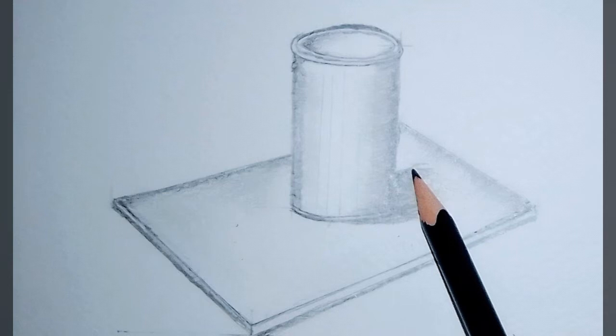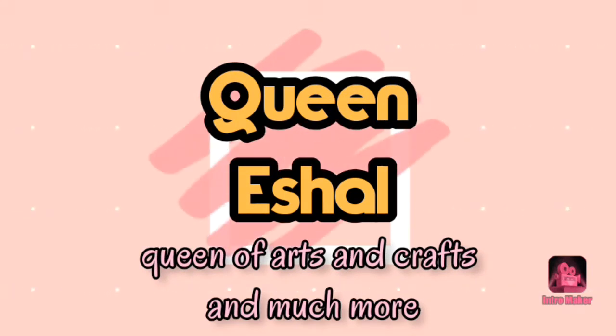Now let me tell you some shading instructions. Inner parts should be shaded dark while the outer part should be shaded light. Light comes from the left side so that part should not be shaded dark. Now let's start.